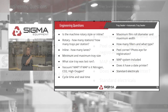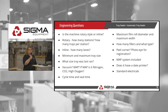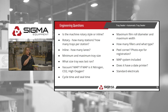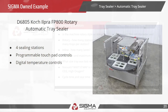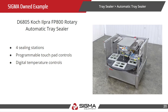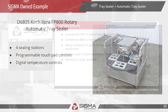For engineering questions, one of the main things is whether it's rotary or in-line — that sets the tone for the rest of the questions. If rotary, how many stations; if in-line, how many lanes. Also needed: minimum and maximum tray size, number of fillers, and maximum film roll width. Our Sigma-owned example is a Cook Ilpra rotary automatic tray sealer with four sealing stations, programmable touchpad controls, and digital temperature controls.